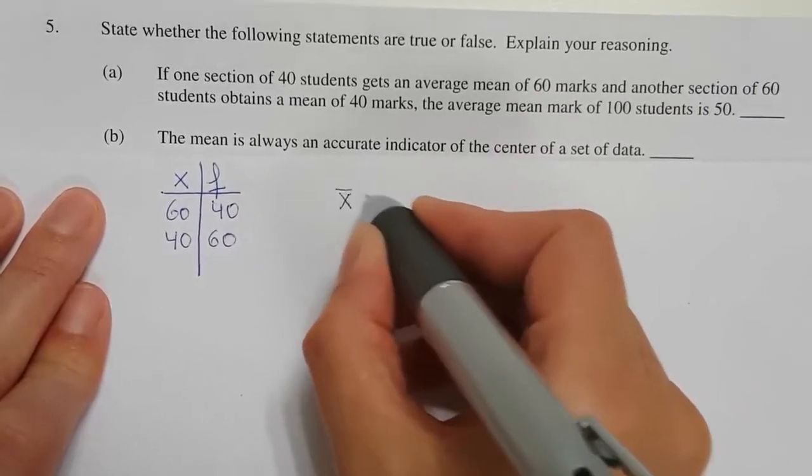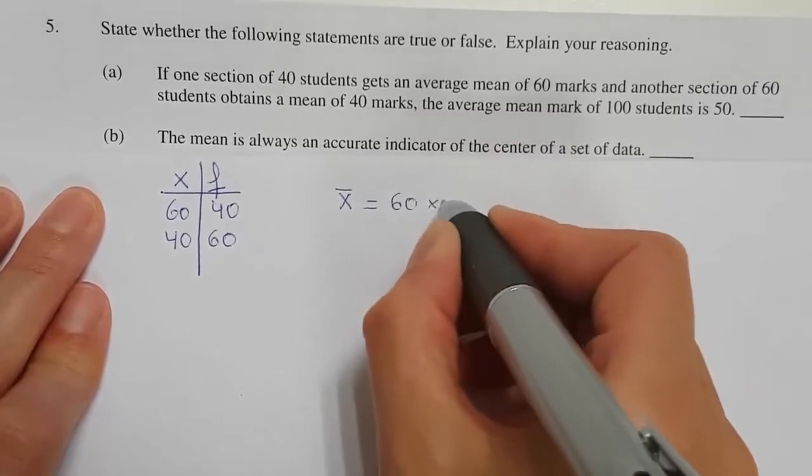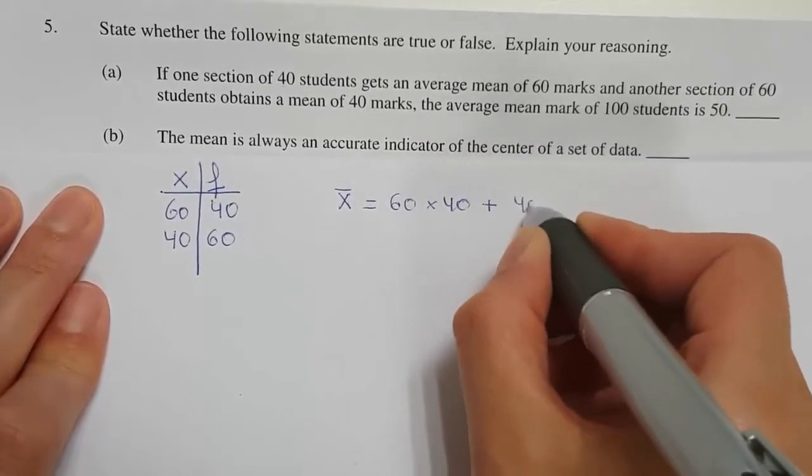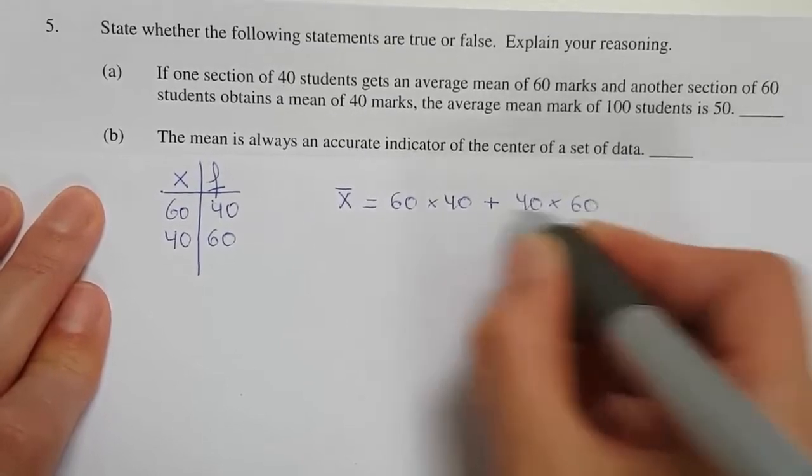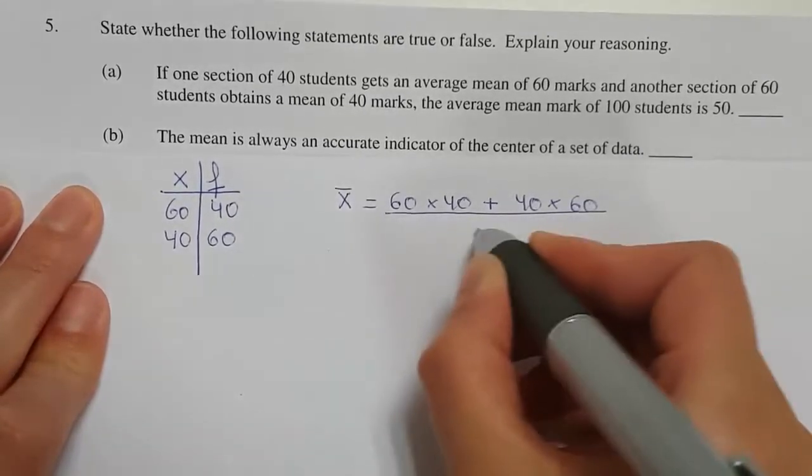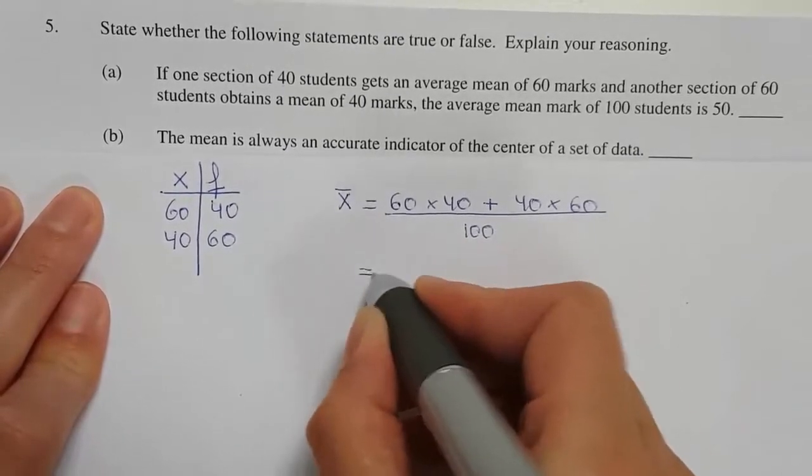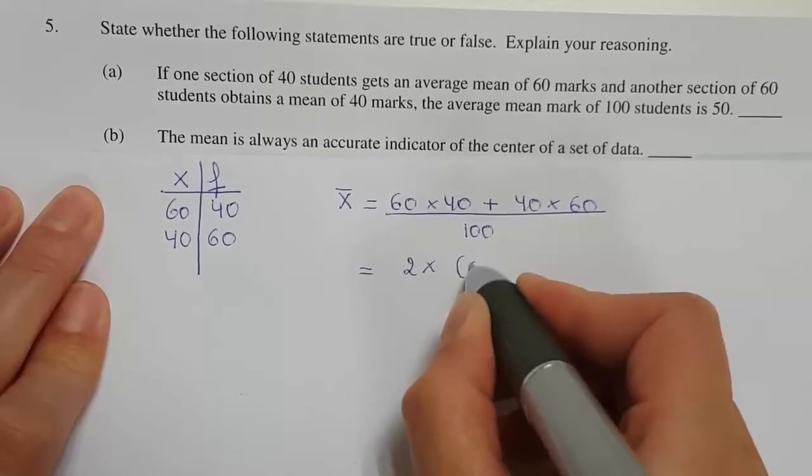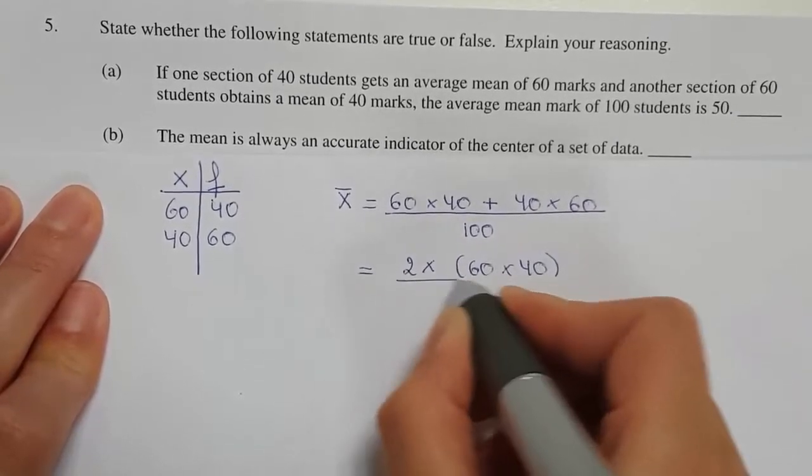60 times 40 plus 40 times 60, divided by 100. So 2 times 60 times 40, divided by 100.